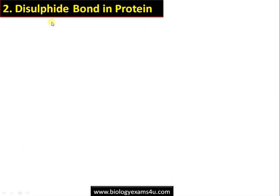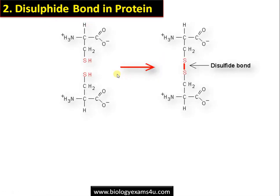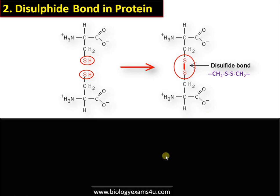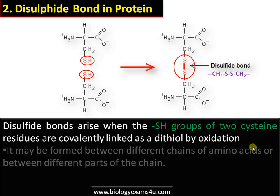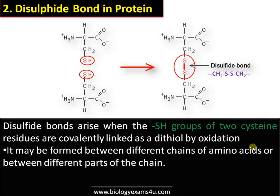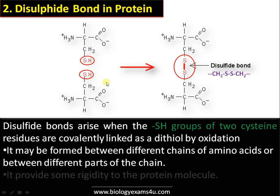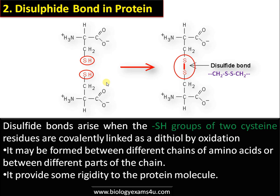Moving to the second bond — the disulfide bond in protein. This bond forms between sulfur-containing amino acids like cysteine, which has an SH group. The S–S (disulfide) bond is formed by an oxidation reaction. It is a covalent bond that may form between different regions of the same polypeptide or between different polypeptide chains, providing rigidity to the protein molecule.